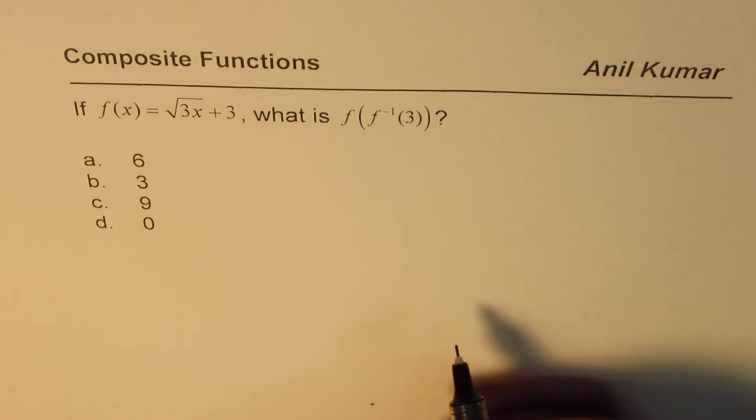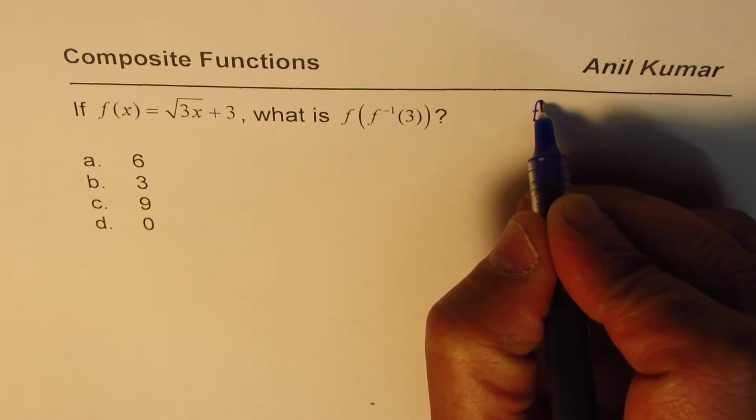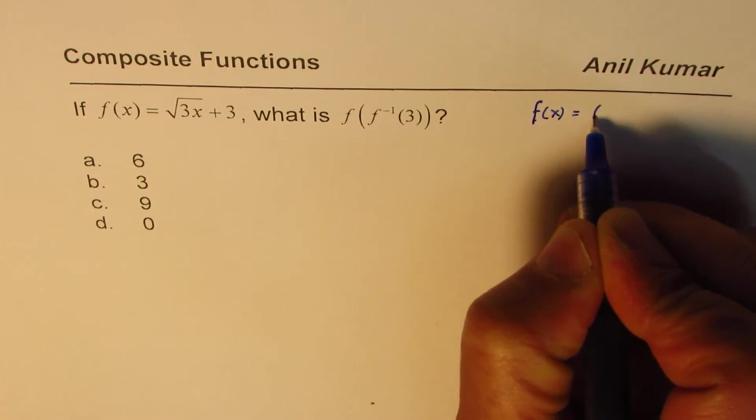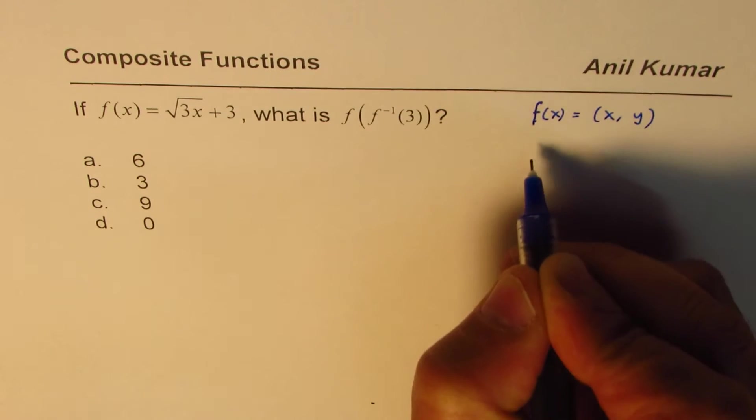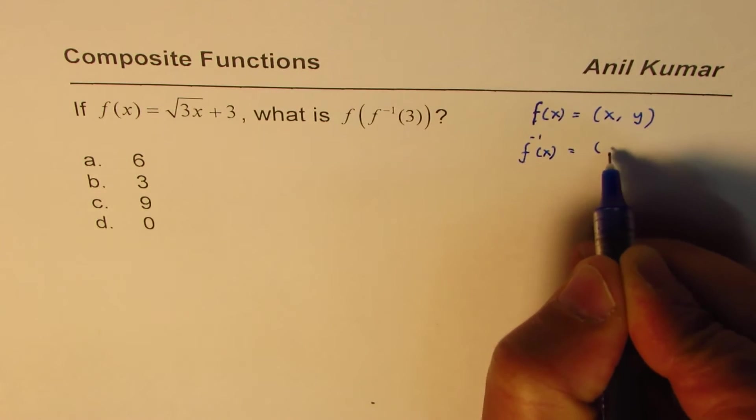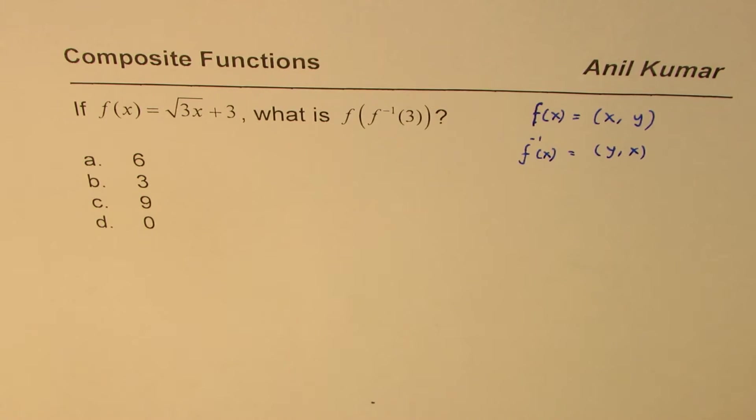Now there are a couple of strategies which you can adopt to solve this particular question. The important strategy is to understand that if f(x) is equal to (x,y), then the same coordinate in f inverse of x will be (y,x). They kind of flip. This is important to understand.